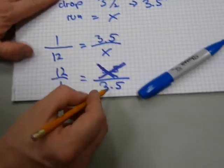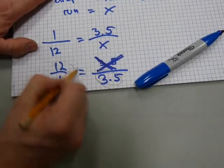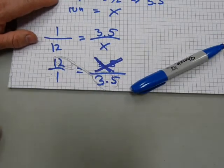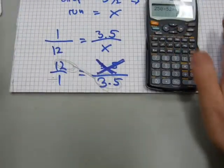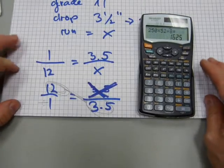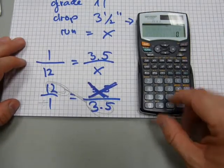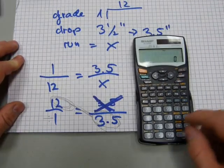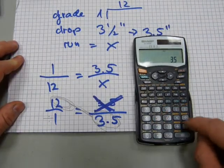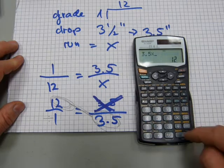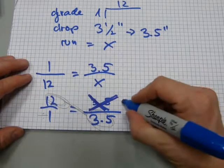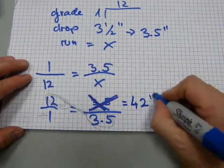So now, again, we cross multiply that amount with that amount. Let's multiply and then divide by 1. Because it's a division by 1, it's not changing anything. It's gonna be just 3.5 times 12 equals 42 inches. Pronto. The run is 42 inches.